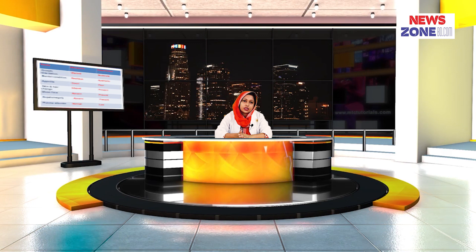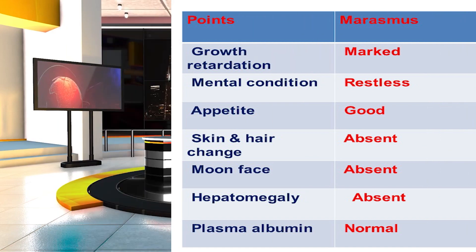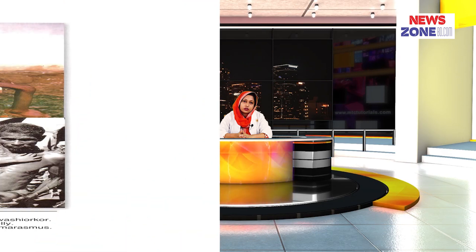In kwashiorkor babies, they have some special characteristics: they have edema, muscle wasting is moderately present, they have hepatomegaly, their face is like a moon face, their albumin concentration is very low, they are apathetic in mental condition, and growth retardation is moderately present.